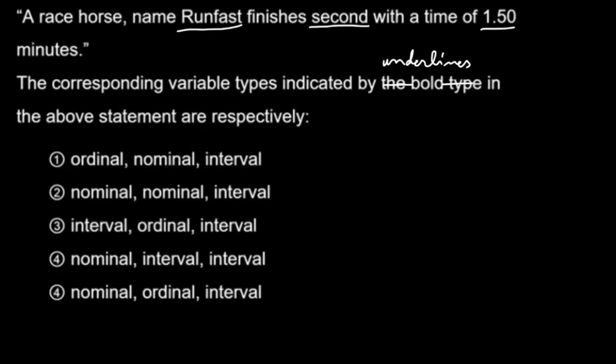A racehorse named Runfast finishes second with a time of 1.5 minutes. The corresponding variable types indicated by the bold type in the above statement are, respectively, 5 choices.